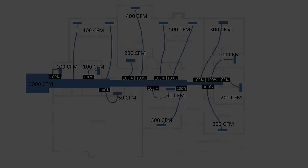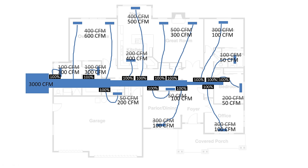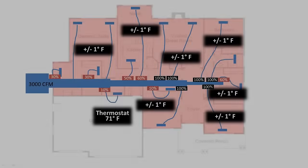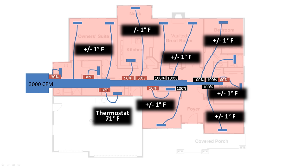That's why you end up with hot spots and cold spots. Instead of getting maybe 400 CFM to the master bedroom, it gets too much air — like 600 CFM. The opposite end of the house, where a room may need 200 CFM, may only be getting 50. This is why you have hot spots and cold spots in your house.